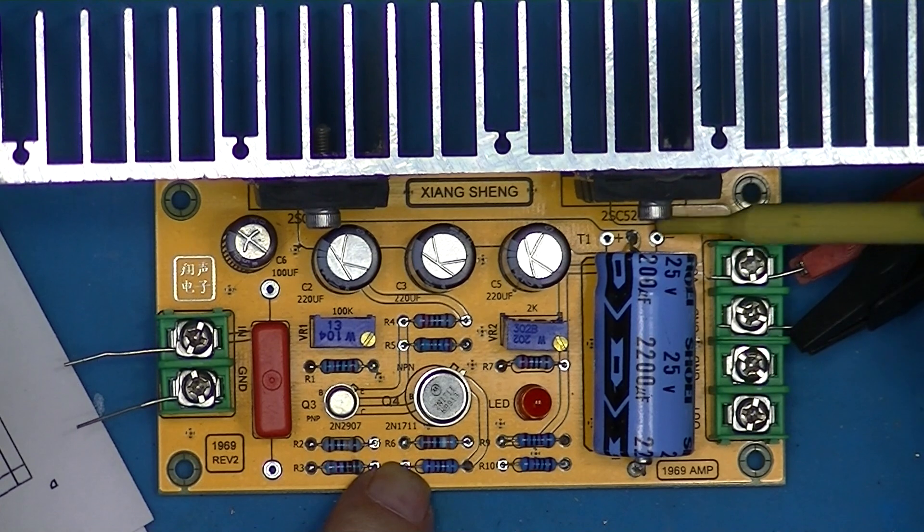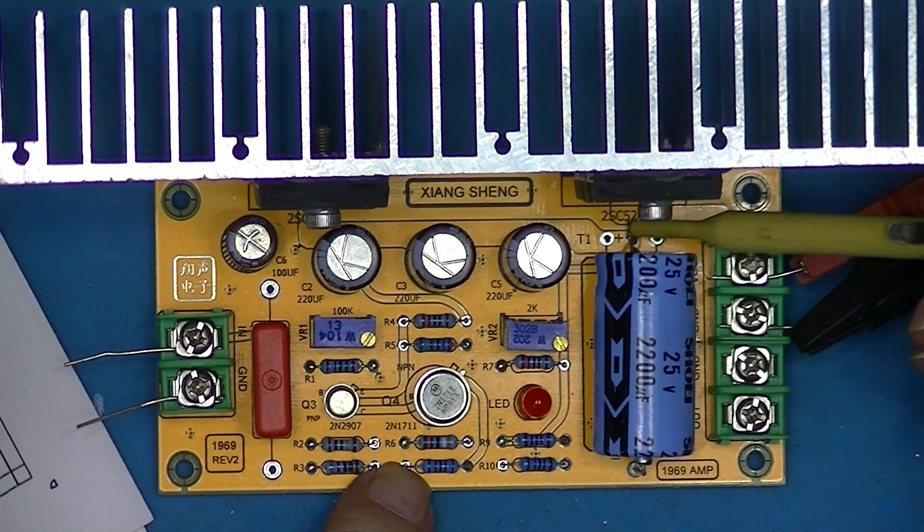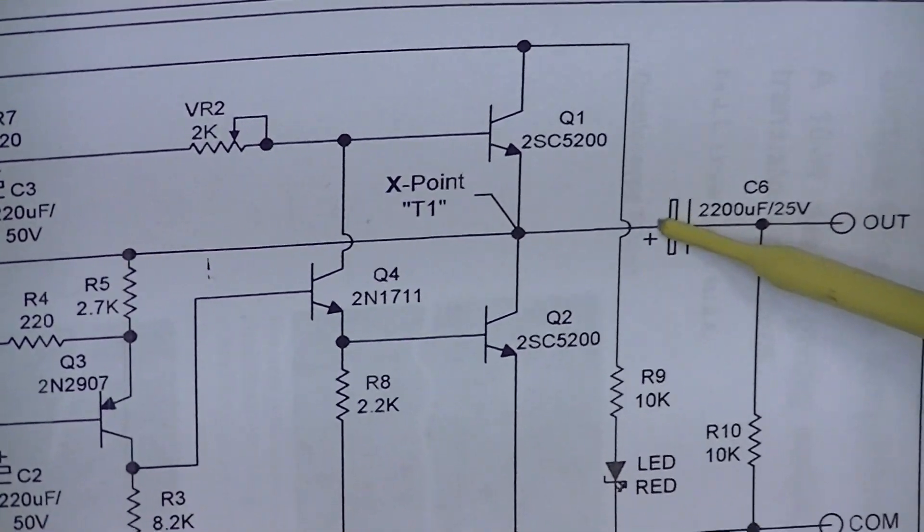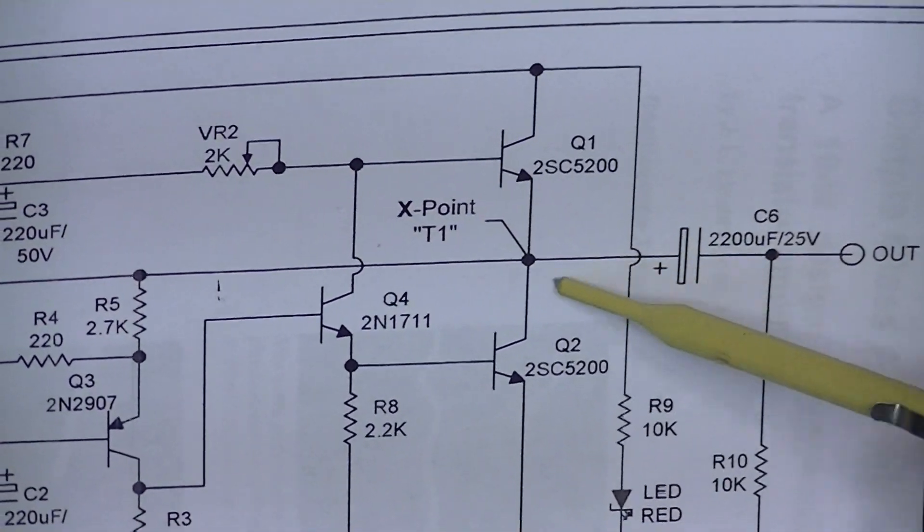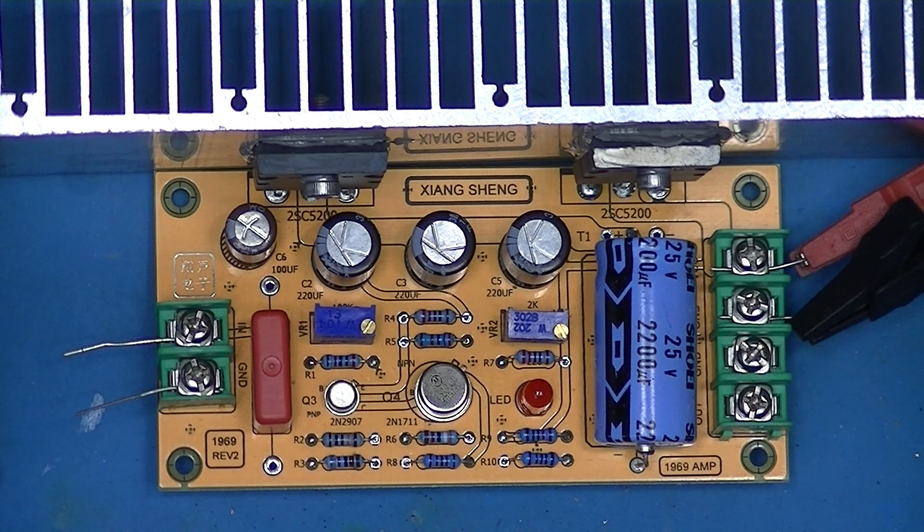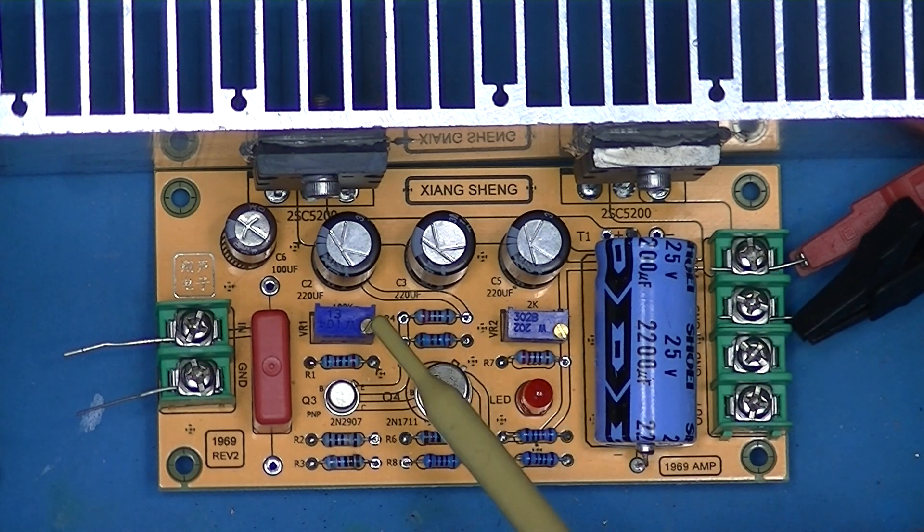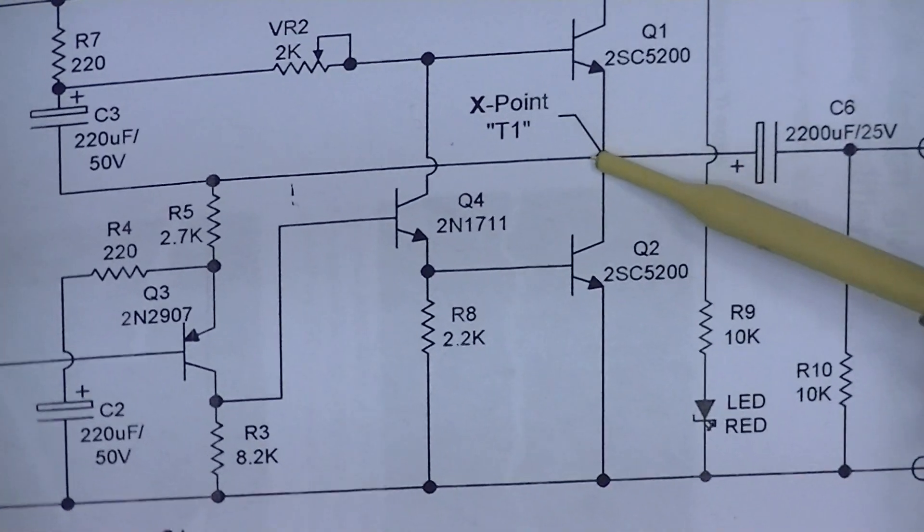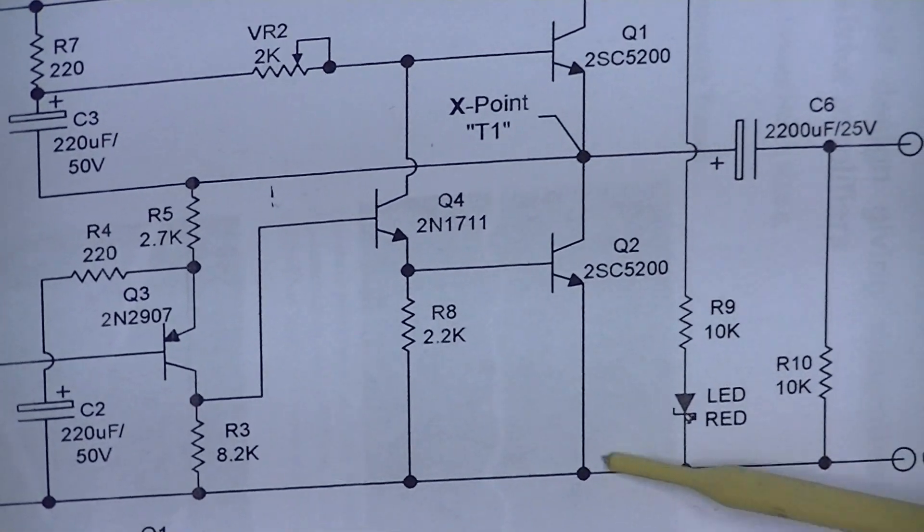You could just as well get on this end of the electrolytic capacitor, that is this electrolytic capacitor. I've applied 24 volts DC, and I adjusted this for 12 volts measured to common here.